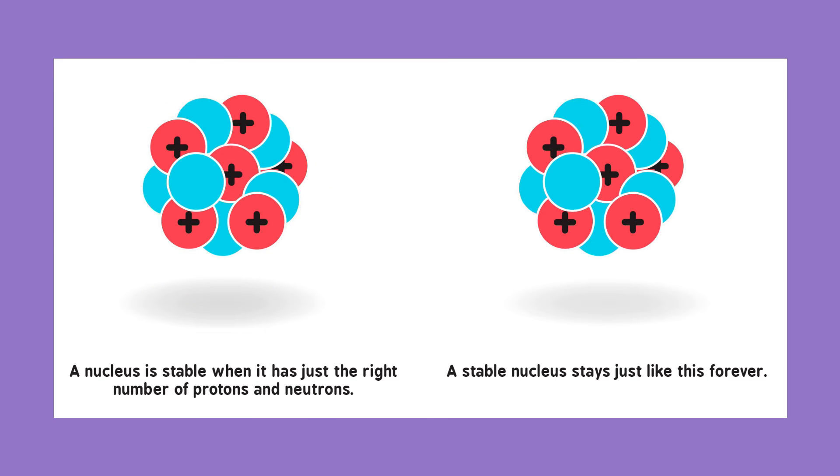A nucleus is stable when it has just the right number of protons and neutrons. A stable nucleus stays just like this forever.